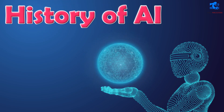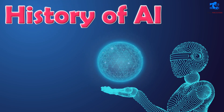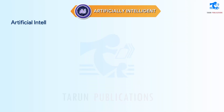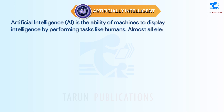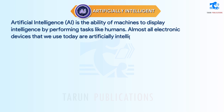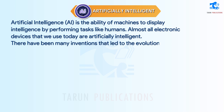History of AI. Artificial intelligence, AI, is the ability of machines to display intelligence by performing tasks like humans. Almost all electronic devices that we use today are artificially intelligent. There have been many inventions that led to the evolution of AI. Let us look at some of these inventions.